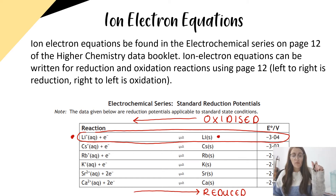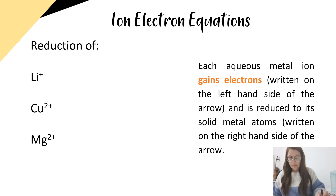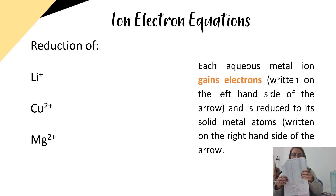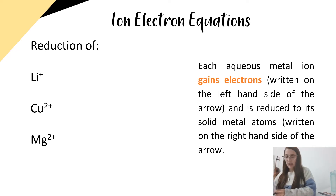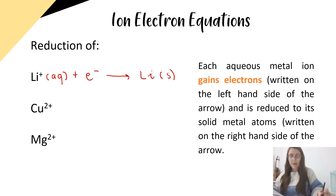So reading them from right to left, they're being oxidised, and from left to right they are being reduced. For example, if I want to write the ion electron equation for lithium, I go to page 12 of the data booklet and look up lithium. For the reduction of lithium ions, I'm looking for lithium plus — it's right at the top. So: lithium plus aqueous plus an electron goes to lithium solid. That is the ion electron equation for the reduction of lithium plus ions.